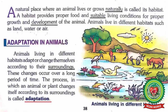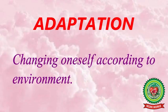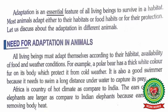Animals living in a particular area develop certain features in their body that help them to live in that environment. These changes occur over a long period of time. The process in which an animal or a plant changes itself according to its surroundings is called adaptation. Underline the word 'adaptation' and write down the definition: changing oneself according to environment. Now turn to page number 39.